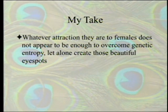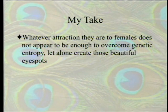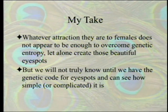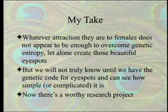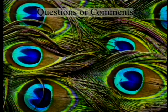Whatever attraction the tails are to females does not appear to be enough to overcome genetic entropy, let alone create those beautiful eye spots. How do you make the eye spots when the females say 'that's a big enough one'? We will not truly know until we have the genetic code for eye spots — obviously there is one — and can see how simple or complicated it is. Now there is a worthy research project.